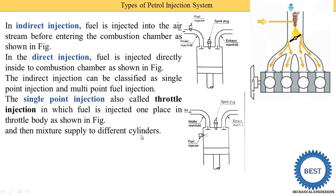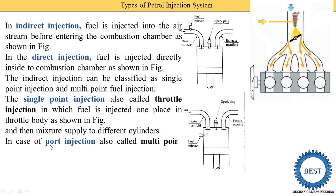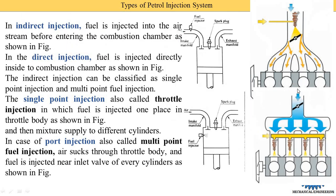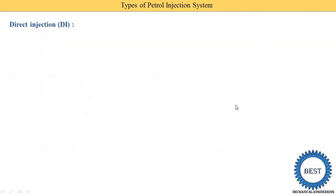In throttle injection, fuel is injected at one place in the throttle body, air and petrol are mixed, and then supplied to every cylinder. In port injection, also known as multipoint fuel injection, air is sucked through the throttle body and fuel is injected near the inlet valve of each cylinder as shown in the figure. For a four-cylinder engine, four injectors are used — one near the inlet valve of each cylinder — compared to only one injector in single point injection.